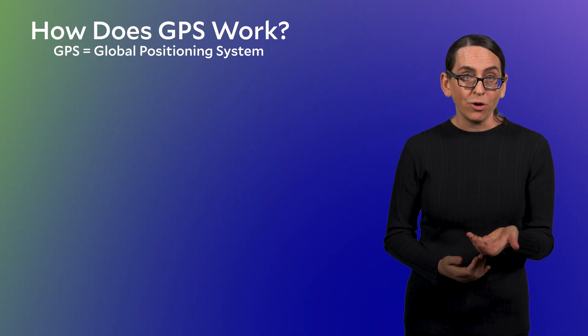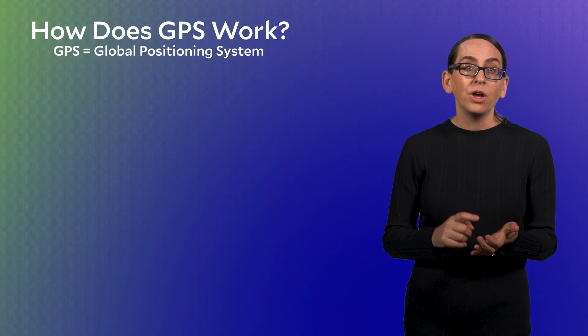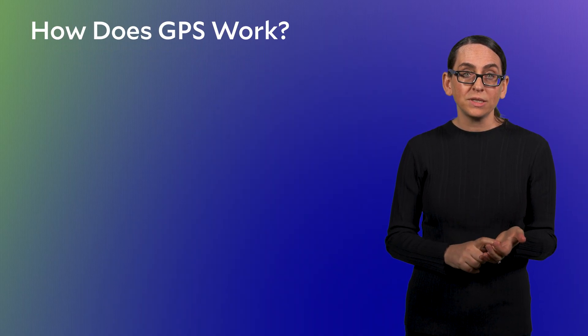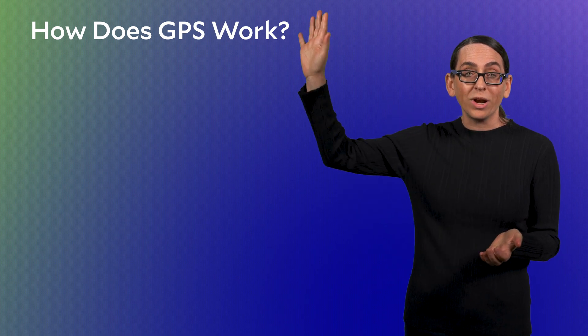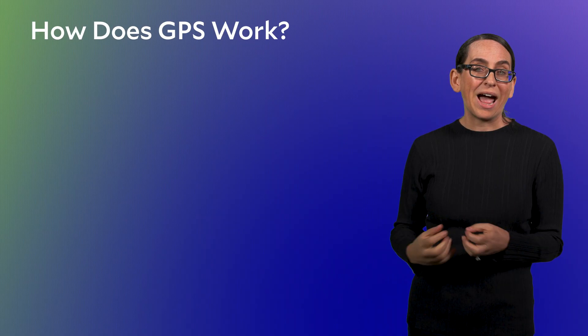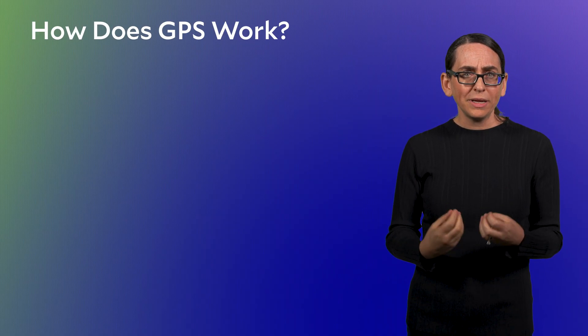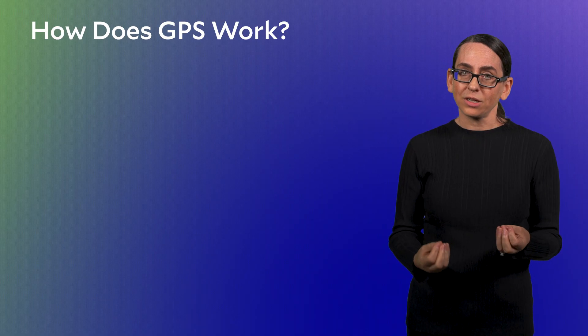If you look down at your phone right now and you ask Google Maps to find your current location, your phone is using signals from some of these GPS satellites orbiting 20,000 kilometers away. Whoa, right? So let's figure out how GPS actually works.